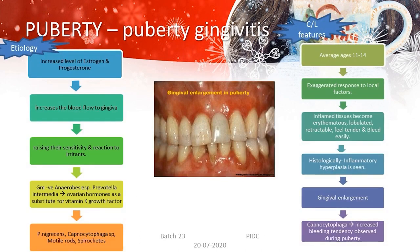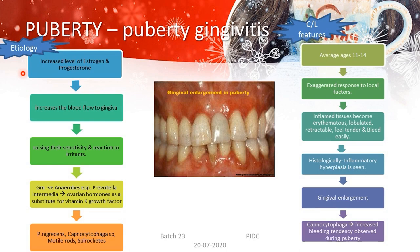Starting with pubertal gingivitis and its etiology — it is always better to explain etiology in the form of a flowchart rather than writing in paragraphs, as it is easier to understand and easier for the listener. Coming to pubertal gingivitis: why does gingivitis occur during this time? The reasons are that there is an increased level of estrogen and progesterone, which increases the blood flow to the gingiva.